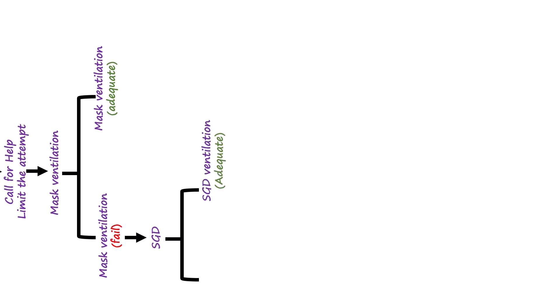If oxygenation can be maintained with a face mask or supraglottic airway, we follow the non-emergent pathway, which allows time to reassess, optimize technique, and consider alternative intubation strategies. If, however, ventilation and oxygenation cannot be maintained, the situation becomes emergent, and we must immediately proceed with rescue measures.